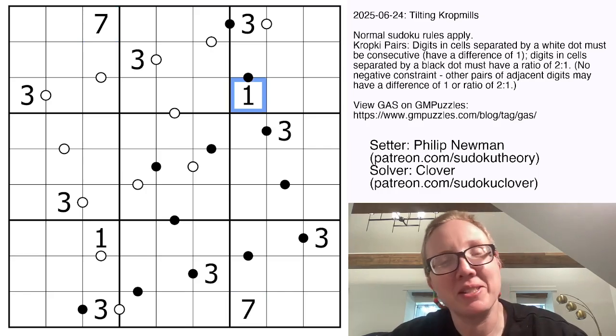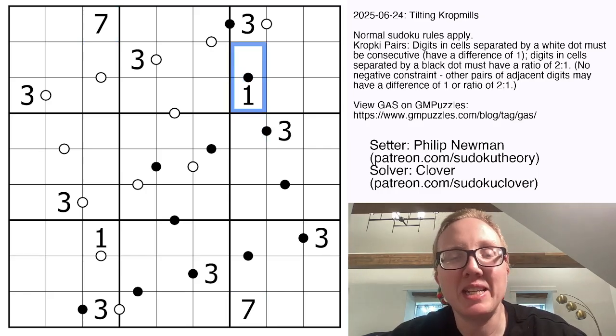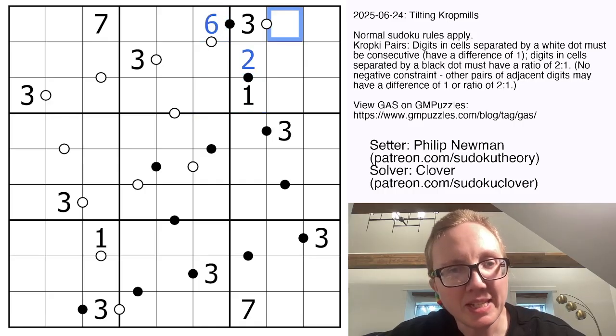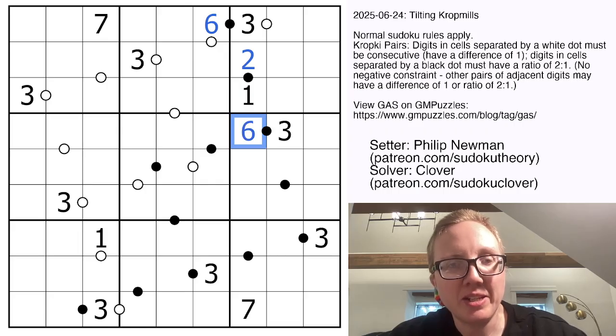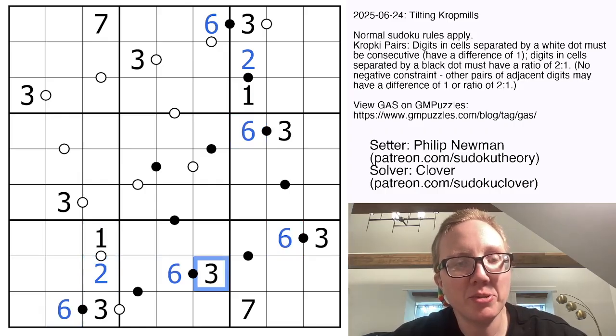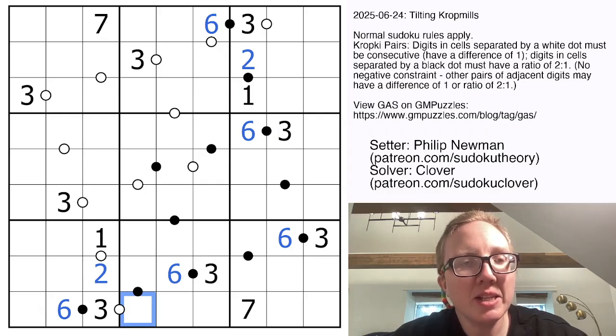Let's start with some of our givens. One is only in a 1 to 2 ratio with two. Three is only in a 1 to 2 ratio with six, so we need to put sixes on black dots next to our threes. One is only consecutive with two, so I'm going to put a 2 there.